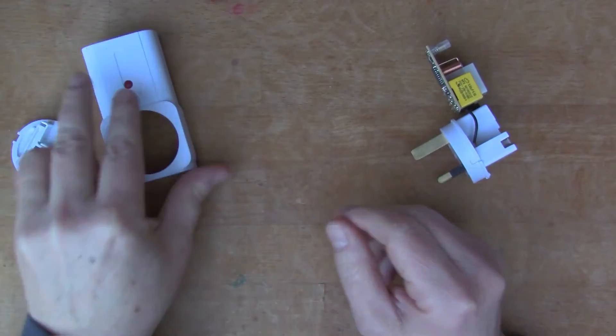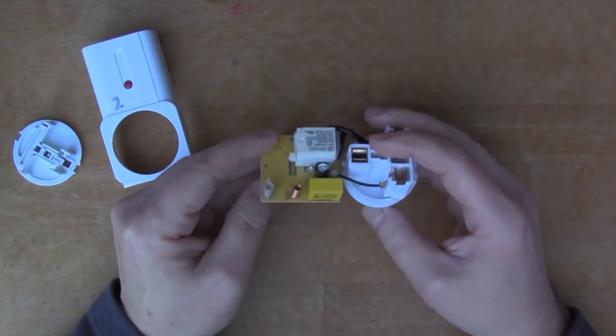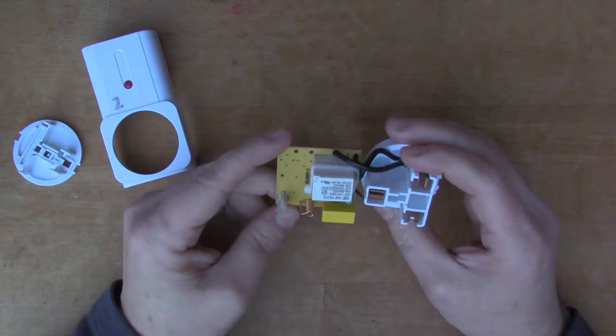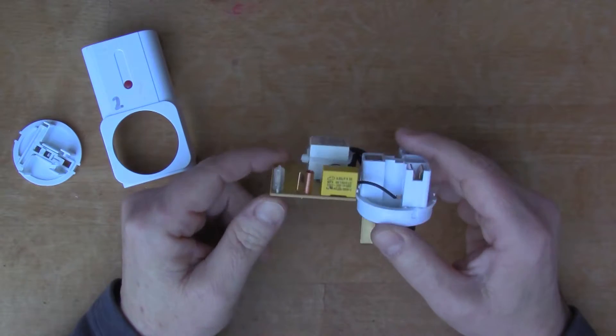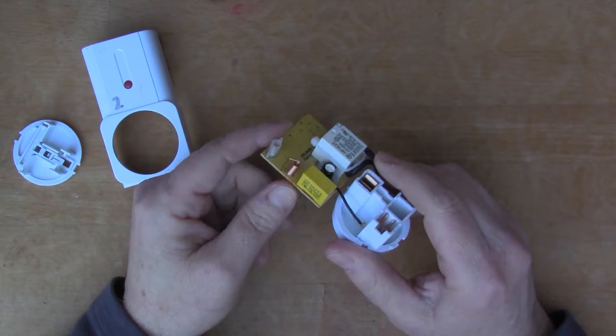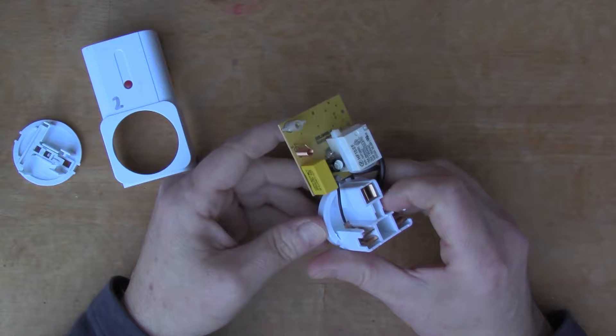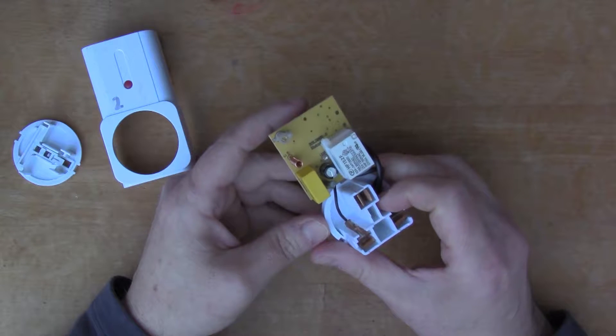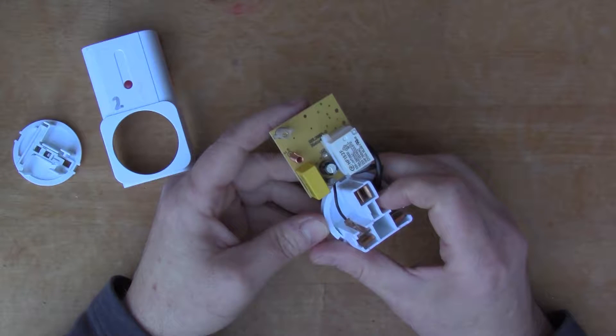In this case, what happens is the relay does click, but then it randomly can switch itself off.